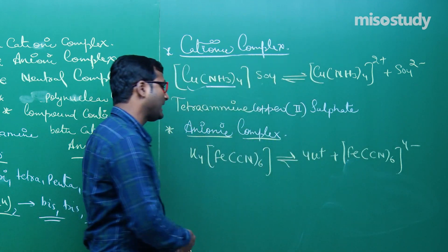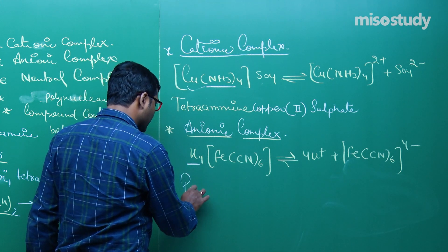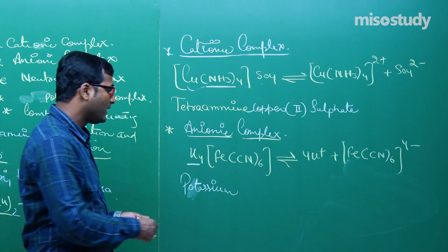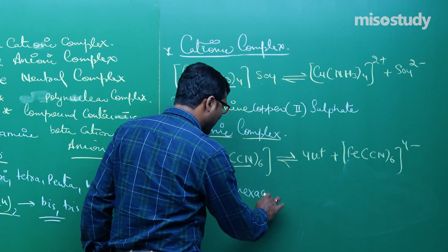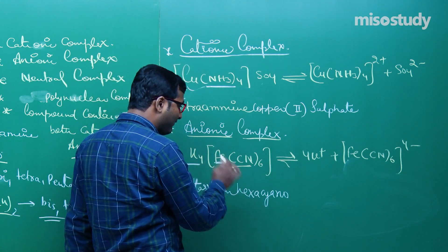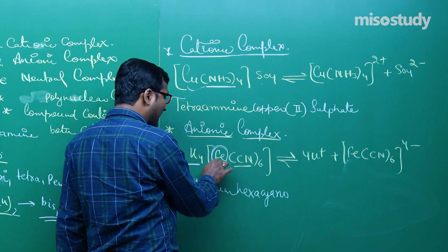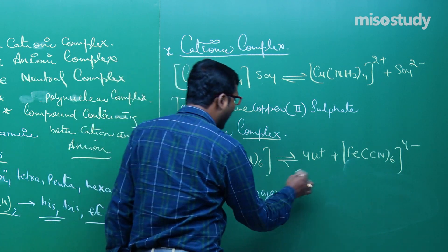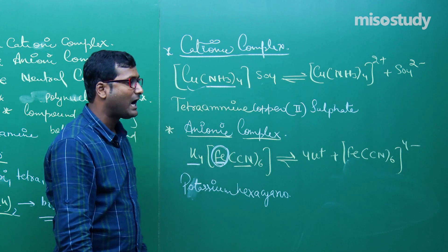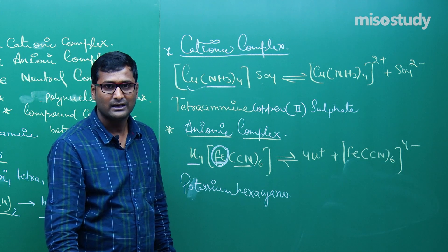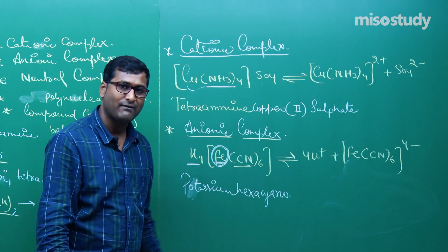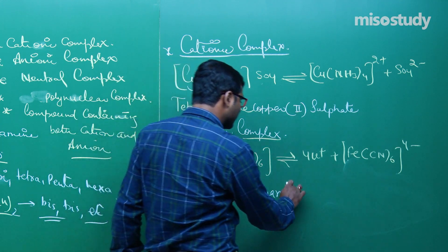How to write the IUPAC name of the anionic complex? Write the counter ion first — potassium. Then write the name of the ligand — 6 times cyano, so potassium hexacyano. In an anionic complex, the central metal atom name uses a different form: for iron it is ferrate, for copper cuprate, for silver argentate, for palladium palladate, for nickel nickelate.